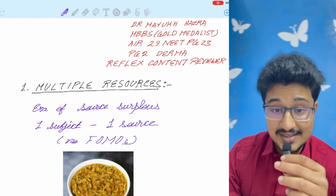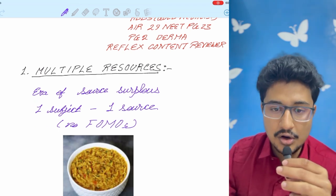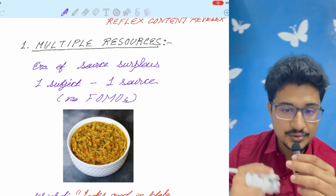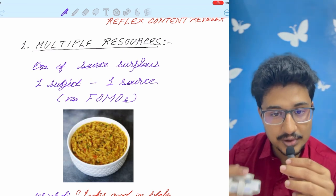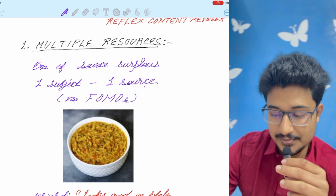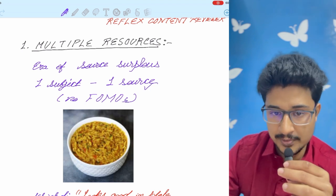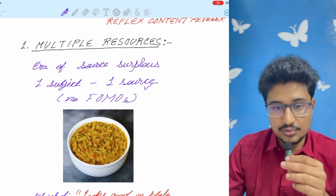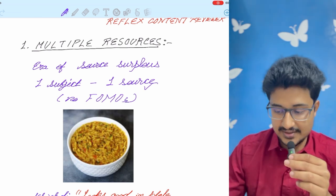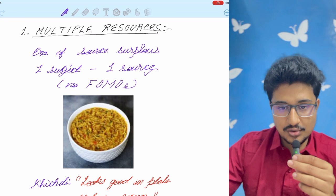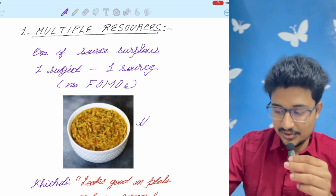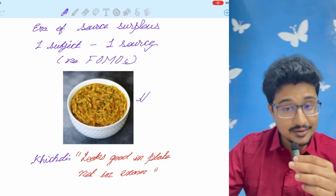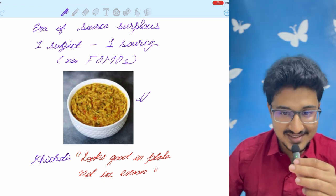First point is using multiple resources. This is the era of source surplus. One thing that you should do, if you don't follow everything from one source, then you can do one thing: one subject, one source, no FOMO. I did this personally because I did one subject from one particular source and I learned from the best faculties. If you mix all the sources, all subjects from all sources, then you would make a khichdi out of that. And khichdi looks good in plate, but it does not look good in the exam.